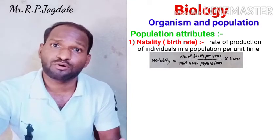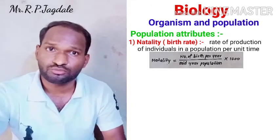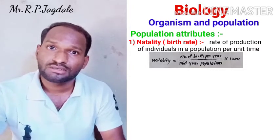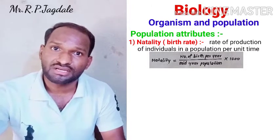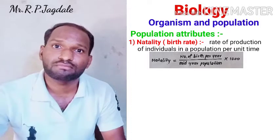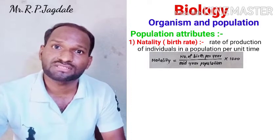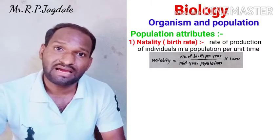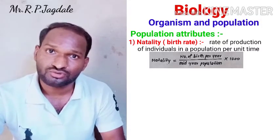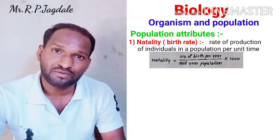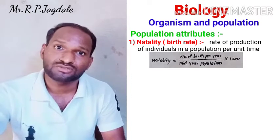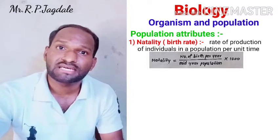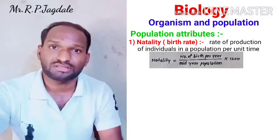Suppose there is a population of 100 humans. In one year, 10 young humans are going to take birth, so 10 are added to the population. So 10 divided by mid-year population 100, multiplied by 1000 — by this formula we calculate natality, that means birth rate.